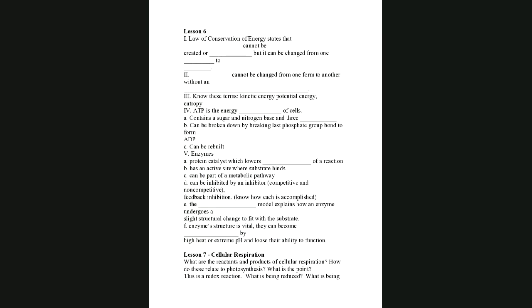Moving on to lesson 6 — the law of conservation of energy states that energy cannot be created or destroyed but can change from one form to another, for example kinetic to potential or potential to kinetic. We also know that energy cannot be changed from one form to another without a loss of usable energy and an increase in disorder, or entropy.